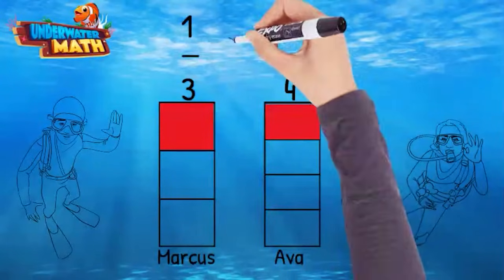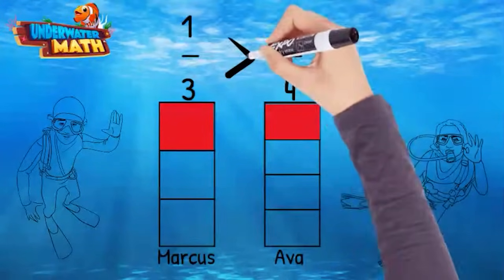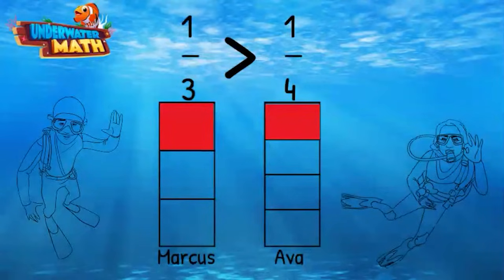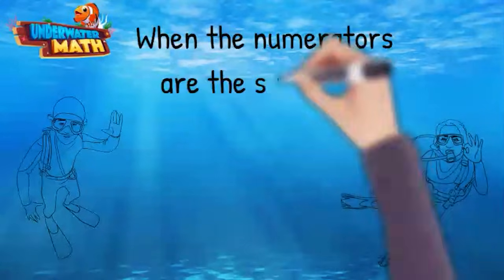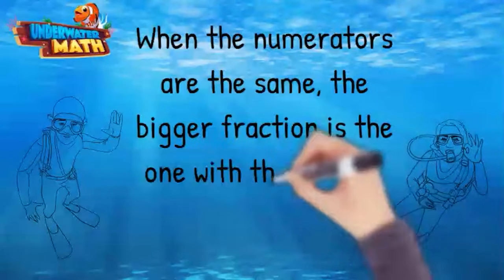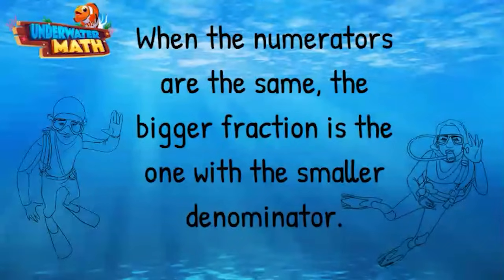That's right — one-third is greater than one-fourth. So we can conclude that when the numerators are the same, the bigger fraction is the one with the smaller denominator.